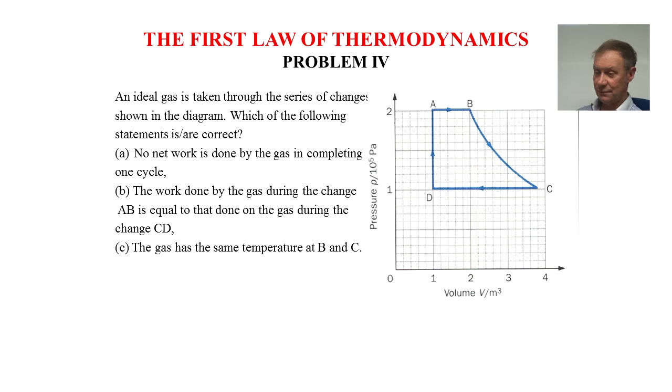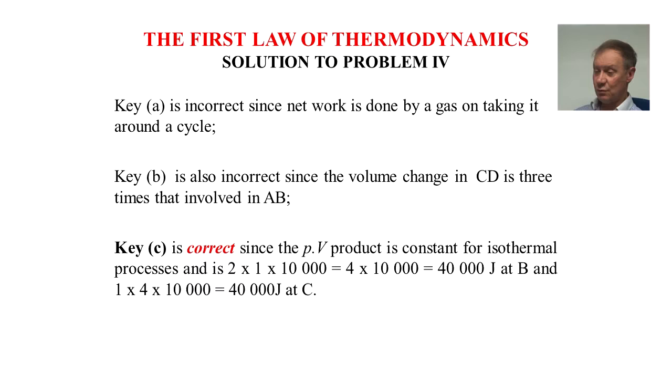Solution to problem 4. Key A is incorrect since net work is done by a gas on taking it through a cycle, as we discussed previously. Key B is also incorrect since the volume change in CD is three times that involved in AB. However, key C is correct since the PV product is constant for isothermal processes, and works out at 40,000 joules at B and also the same at C.